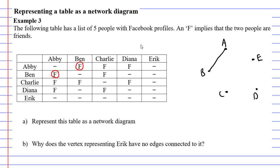Next you'll notice that Charlie and Abby are friends and you'll notice that in two different spots. Nevertheless, we just draw one edge between Charlie and Abby.